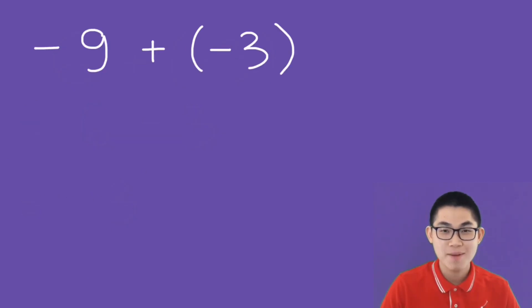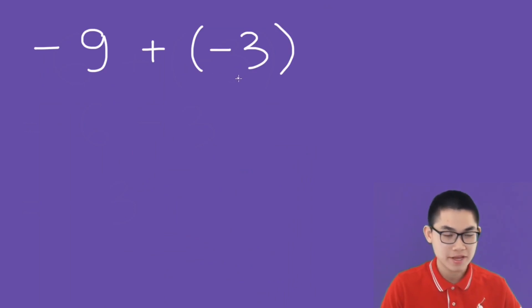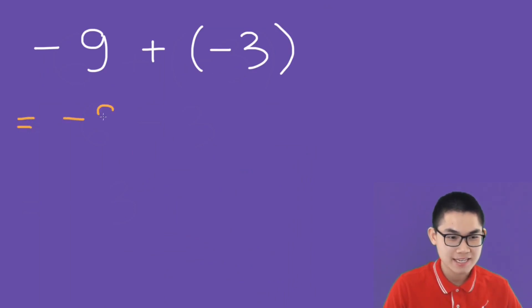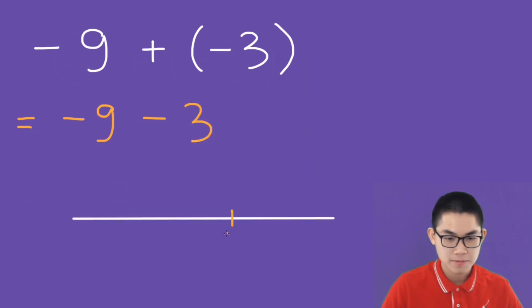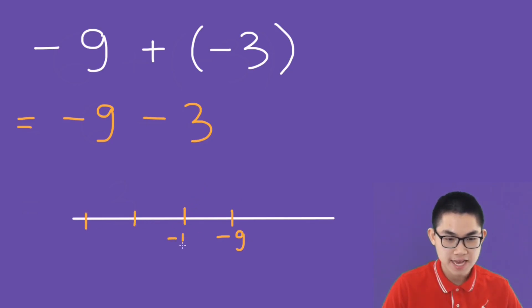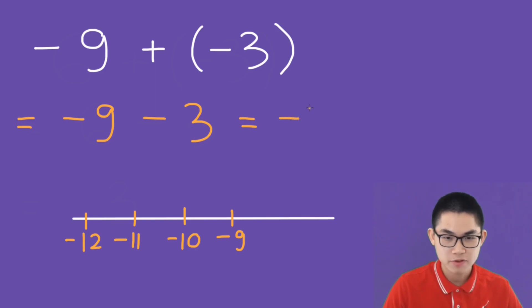How about negative 9 plus negative 3? We have negative 9 minus 3. We move to the left 3 times: 1, 2, 3. So negative 9, this is negative 10, negative 11, negative 12. So the answer is negative 12.